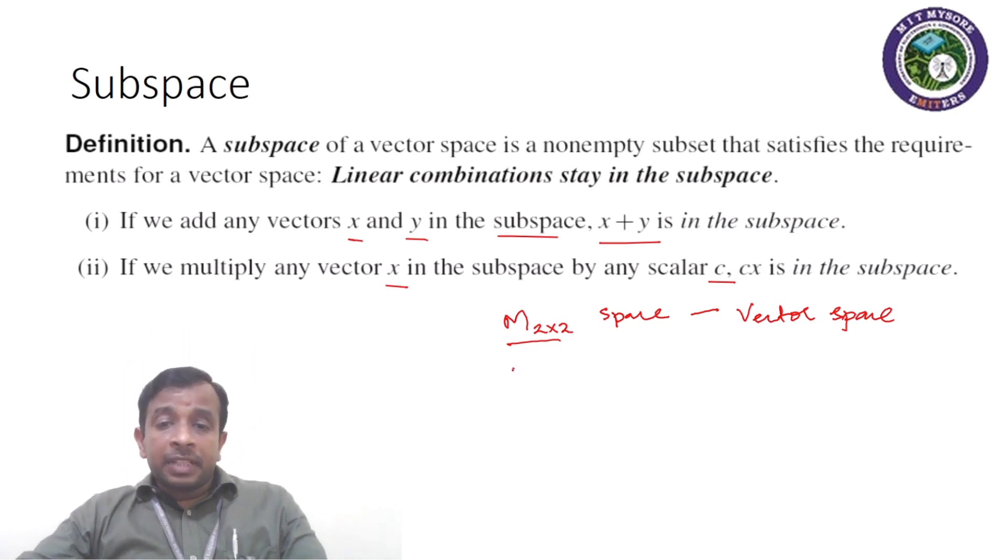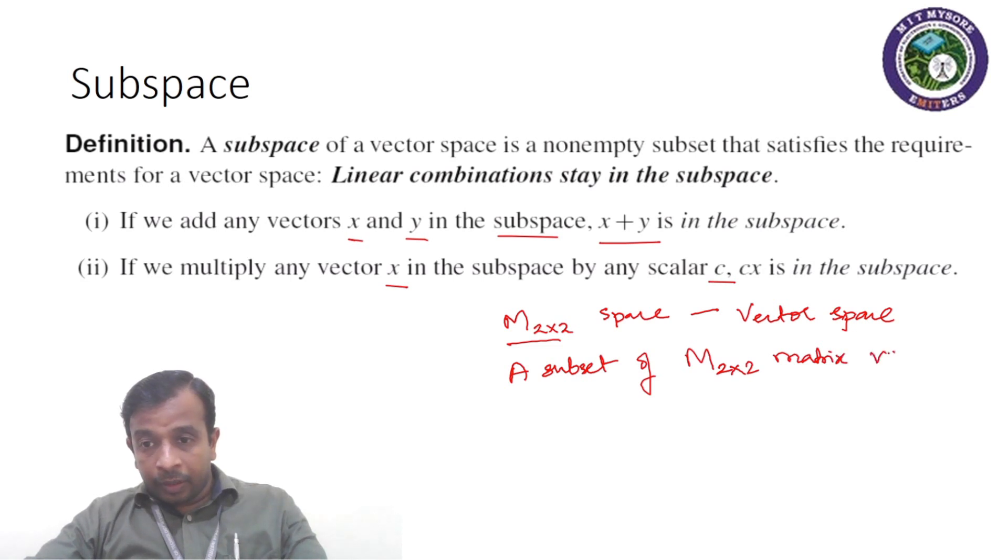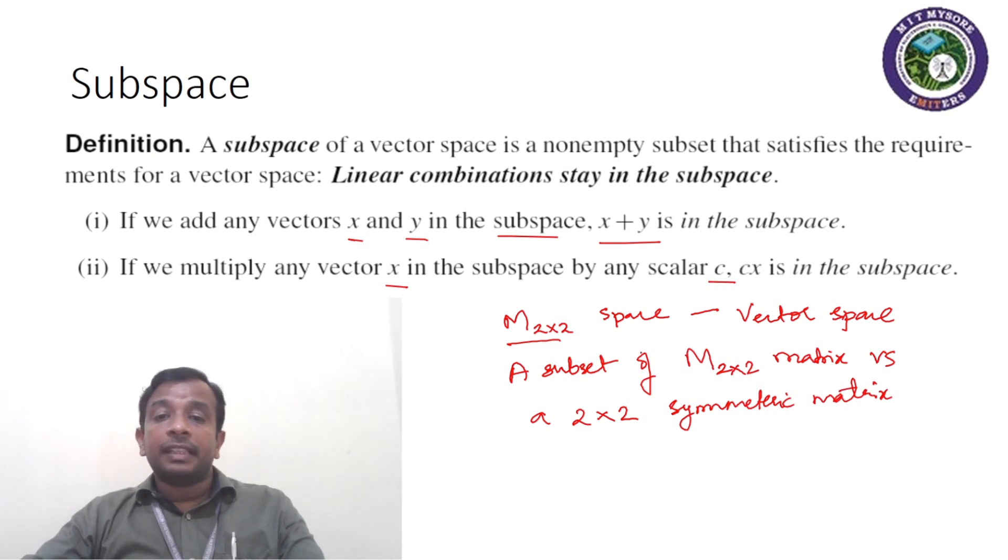So now a subset, a non-empty subset of M2 cross 2 matrix vector space, would be a 2 cross 2 symmetric matrix. Hope viewers agree on this, that 2 cross 2 symmetric matrix is a subset of M2 cross 2 matrices—that is, all the matrices of order 2 cross 2.